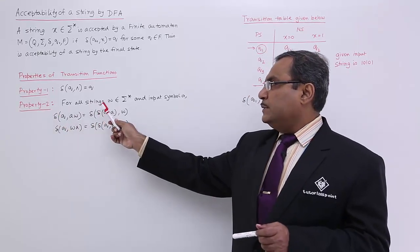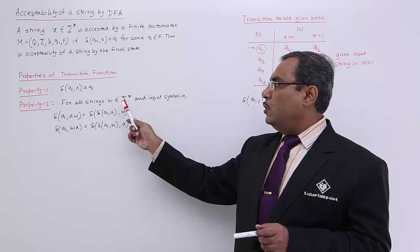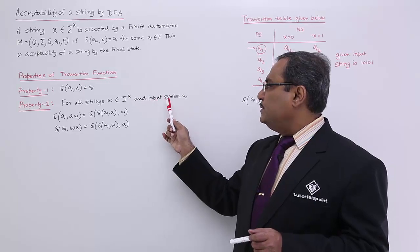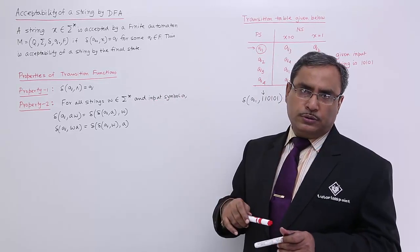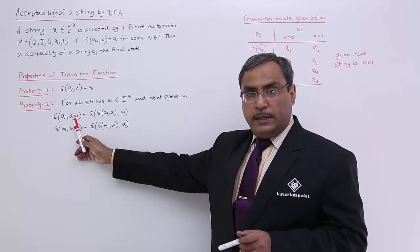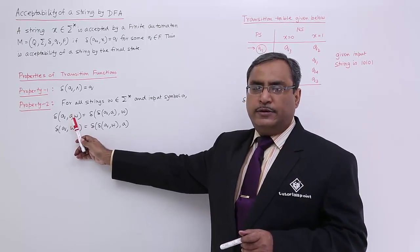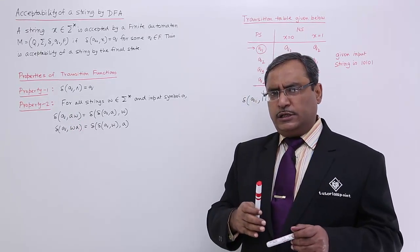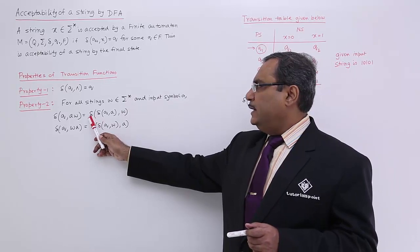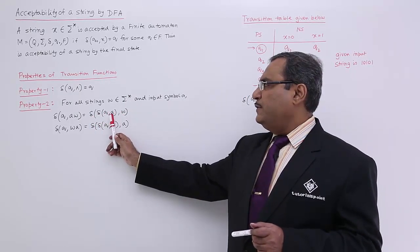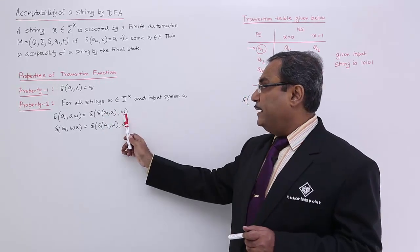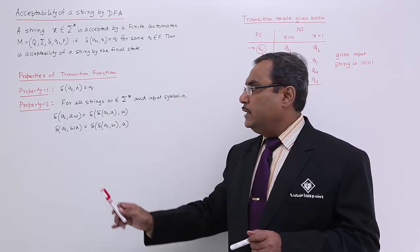Property number two: let us suppose there is a string called w which belongs to sigma star, consisting of input alphabets, and a single input symbol A which also belongs to sigma. Now if we apply delta(q, aw) — that is the concatenated string where a is the first symbol and w is the rest — then delta(q, aw) equals delta(delta(q, a), w). That means if we apply a to state q, we reach the next state, and on that next state if we apply w, we reach the same terminating state.